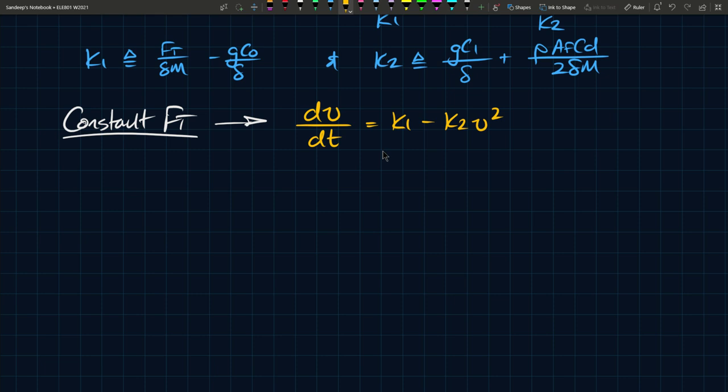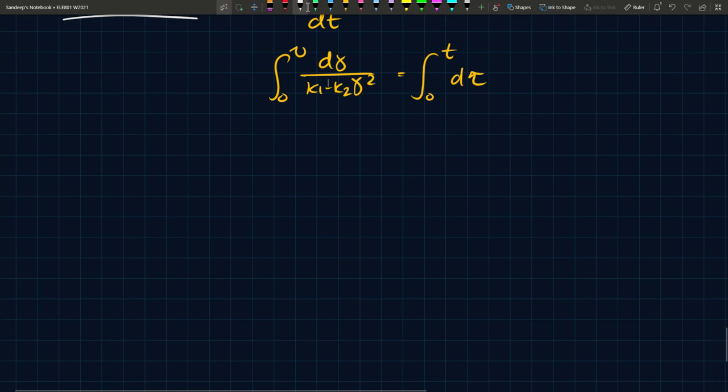Now what you can do is obviously solve this, because this is a simple differential equation that you should be capable of solving if you've taken any fundamental calculus courses. You can solve this by bringing the dt up and bringing the denominator down. You have an integral from 0 to V of d gamma over k_1 minus k_2 gamma squared equals integral from 0 to t of d tau. The integration variable is not the same as the limit.